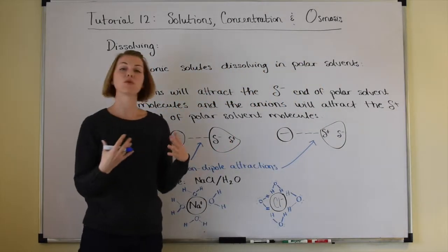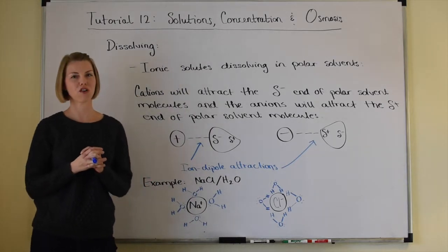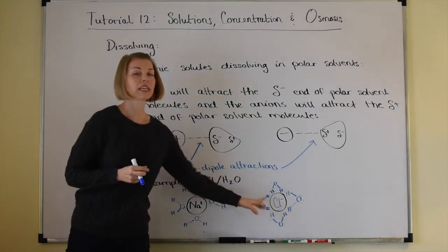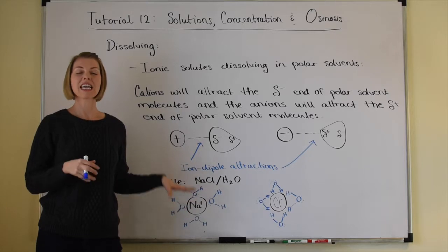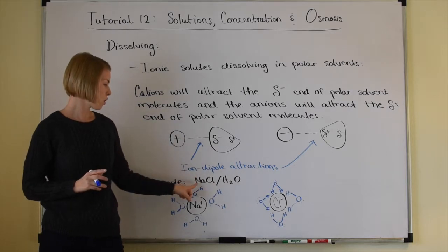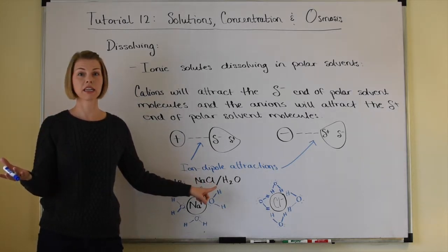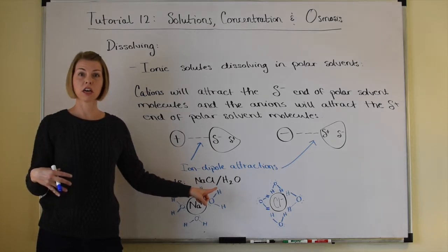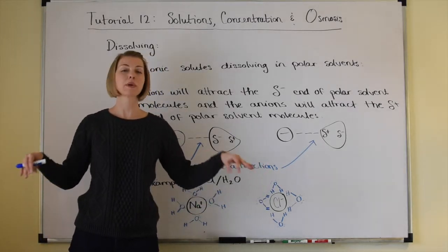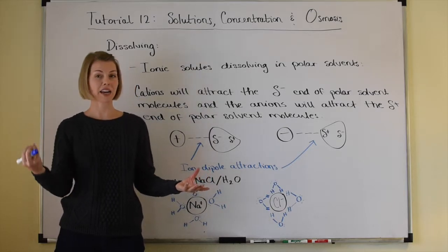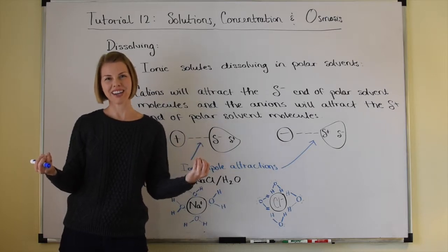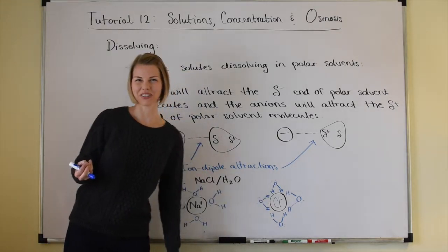One important point: the dissolving process is not a chemical change, it is just a physical change. Notice that we had sodium cations and chloride anions before in the solid state. When they dissolved into the water, the cations and anions separated from one another and got further apart, but chemically they're unchanged — sodium cations are still sodium cations and chloride anions are still chloride anions; they just now have water molecules around them.